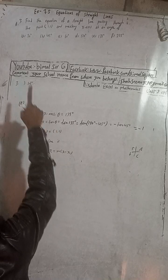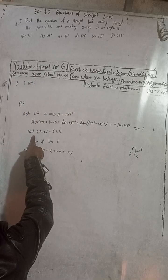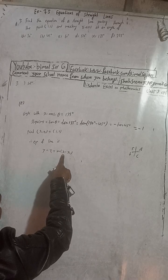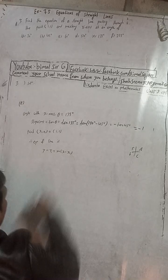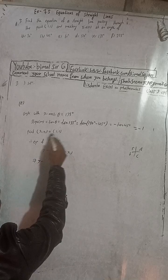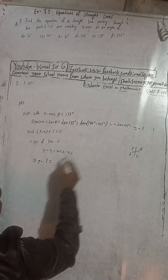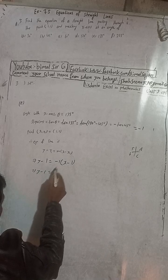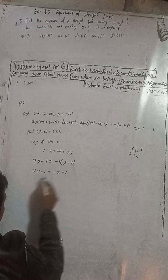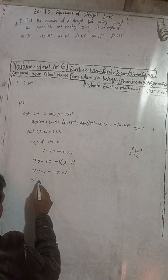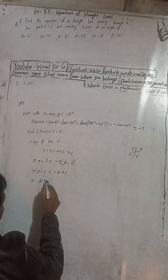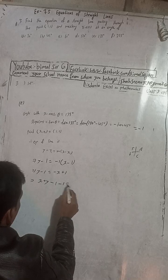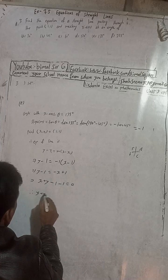The point x1, y1 is (1, 1). Using y minus y1 equals m into x minus x1: y minus 1 equals minus 1 into (x minus 1), which gives y minus 1 equals minus x plus 1. Rearranging: x plus y minus 1 minus 1 equals 0, so x plus y minus 2 equals 0.